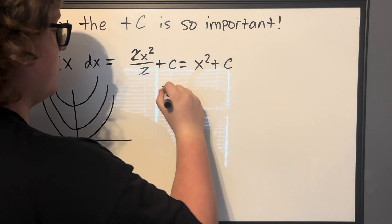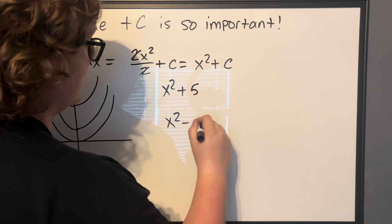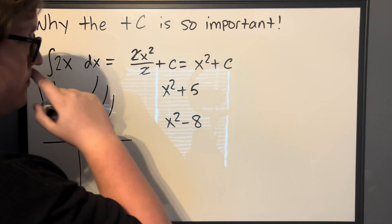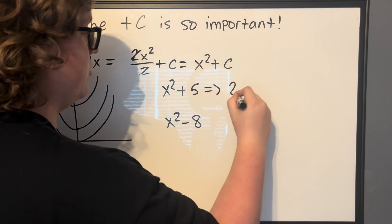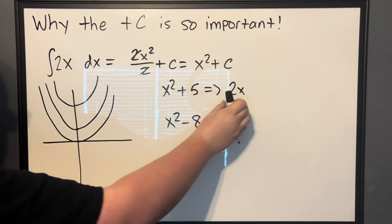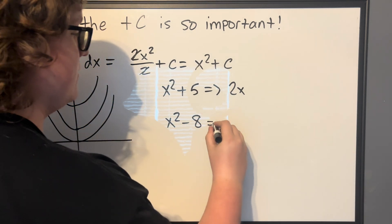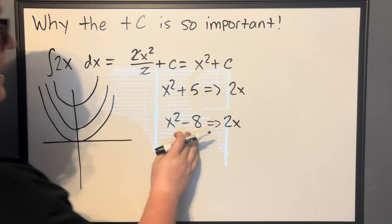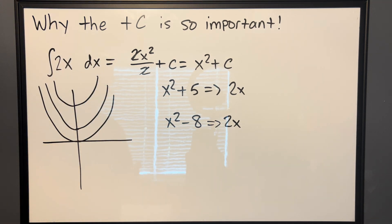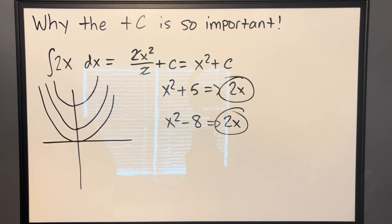If we look at the derivative of x squared plus 5 versus the derivative of x squared minus 8 — taking the derivative of these, x squared gives us 2x. The 5 is a constant so its derivative is 0. With x squared minus 8, same thing: we get 2x, and the minus 8 is just a number so its derivative is 0. Both of these get you back to the original function we wanted, and it didn't matter what constant we chose. This is true for any number you plug in — it doesn't have to be integers.